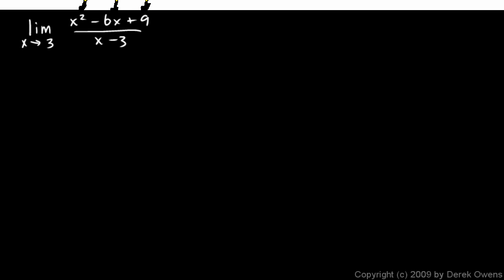So we try to simplify this. This can be rewritten as the limit as x approaches 3. The numerator factors as (x - 3)(x - 3), and that's over x - 3. So the denominator will cancel out with one of those factors from the numerator.